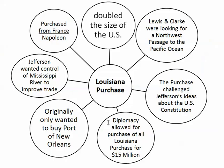Let's review the Louisiana Purchase. Thomas Jefferson purchased it from France — Napoleon, the emperor of France, was the leader who sold it. That purchase doubled the size of the United States — a huge impact. Jefferson originally wanted to control the Mississippi River to improve trade and commerce for people out west past the Appalachian Mountains, and he originally just wanted to buy the port of New Orleans. But his diplomacy allowed for the purchase of all of the Louisiana Territory for $15 million. We know that the purchase challenged Thomas Jefferson's strict constructionist ideas about the Constitution, and Lewis and Clark were commissioned to look for a northwest passage to the Pacific Ocean.